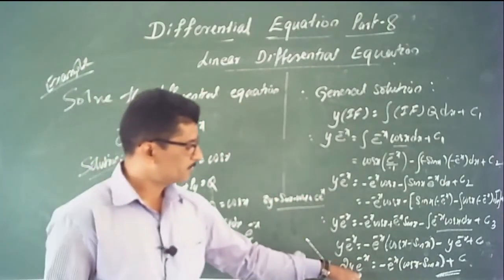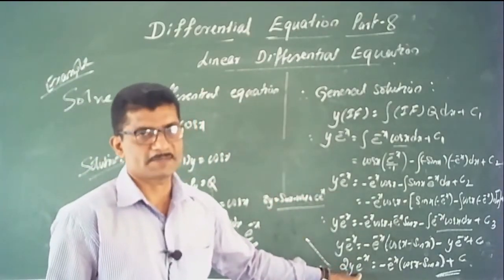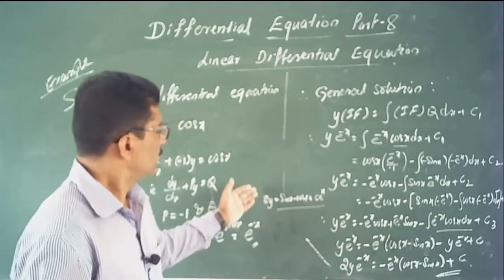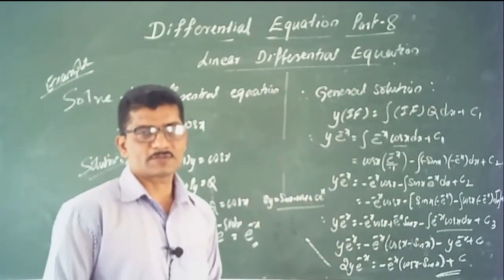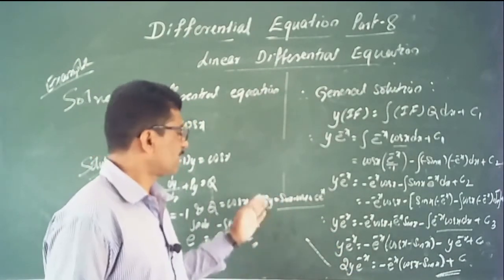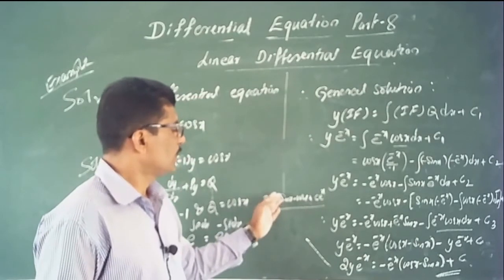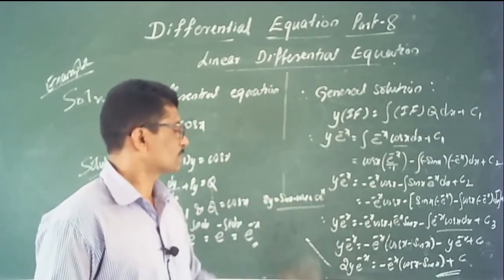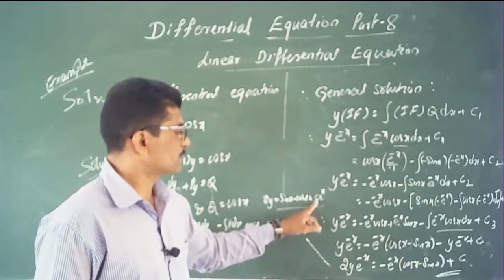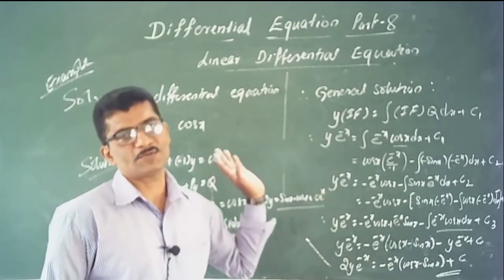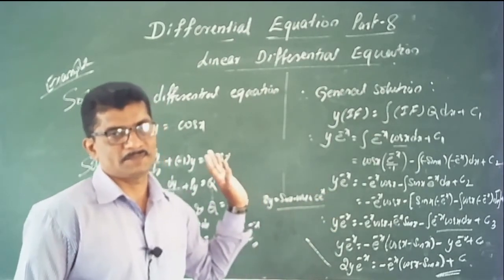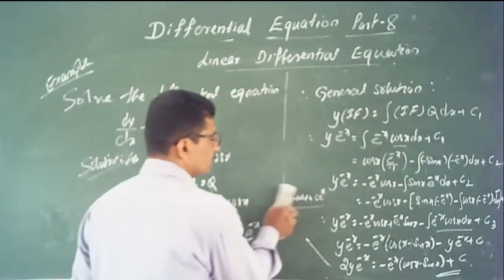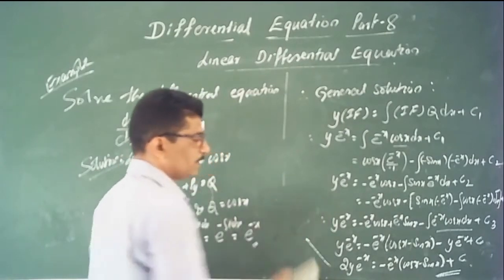Therefore y = ½(sin x − cos x) + C·e^x. This is the general solution of the given differential equations.